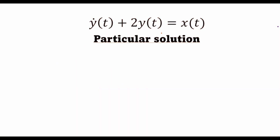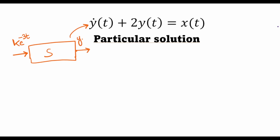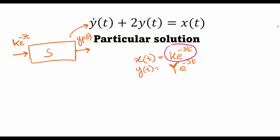Next we calculate the particular solution. For this problem we assume the system is excited with an input of k times e to the power minus t, and the output will be the particular solution. The assumption we make is that if the particular input is a decaying exponential, then the response of the system will also be a decaying exponential, with some constant Y times e to the power minus three t.